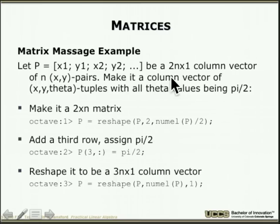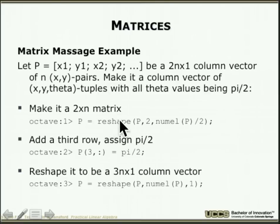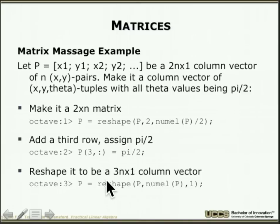You can massage matrices in interesting ways. For example, if 'p' is a 2n×1 column vector of xy pairs, you can reshape it into a 2×n matrix, assign a third row of values (e.g., all pi/2), then reshape back to 3×n and then to a 3n×1 column. This inserts a third value after every pair, enabling efficient manipulation of structured data.